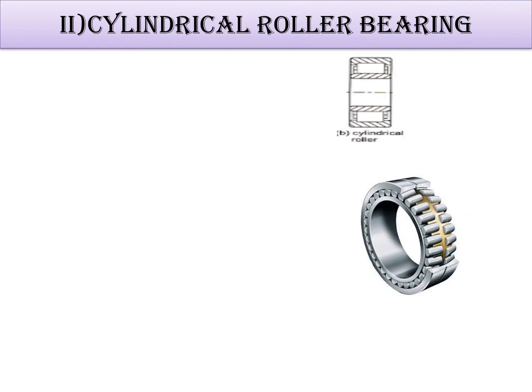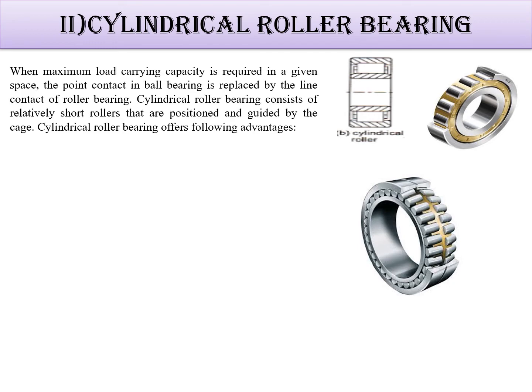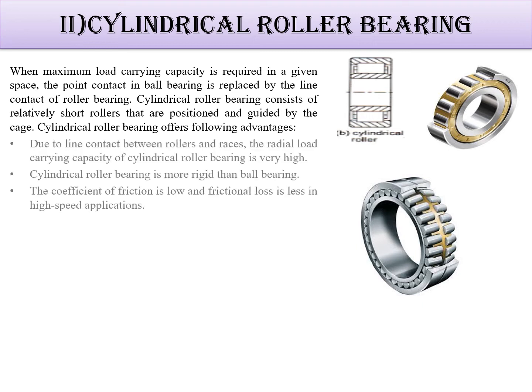The next is the cylindrical roller bearing. Here the rolling elements are cylindrical in shape — that's why it is named cylindrical roller bearing. This is a double-row and this is a single-row cylindrical bearing. It allows line contact instead of point contact as in ball bearing, which helps bear more load. The radial load carrying capacity is high and its coefficient of friction is low, so losses are less even at high speed.